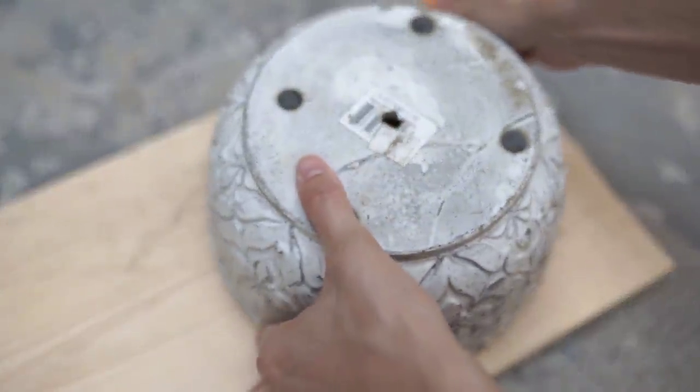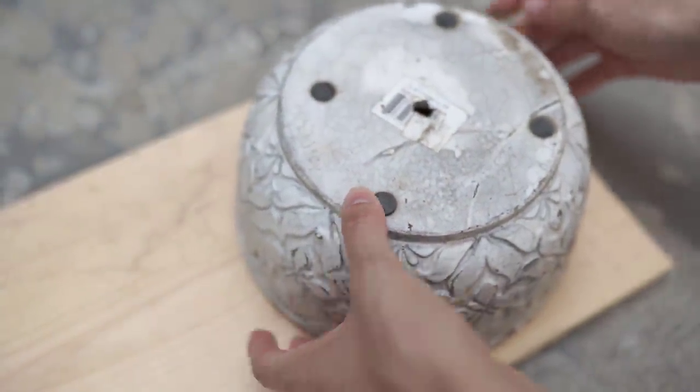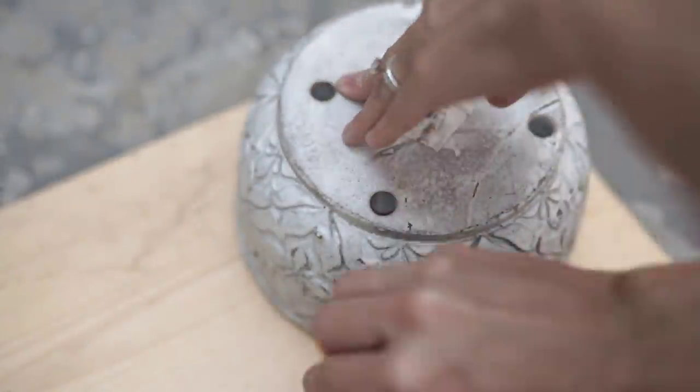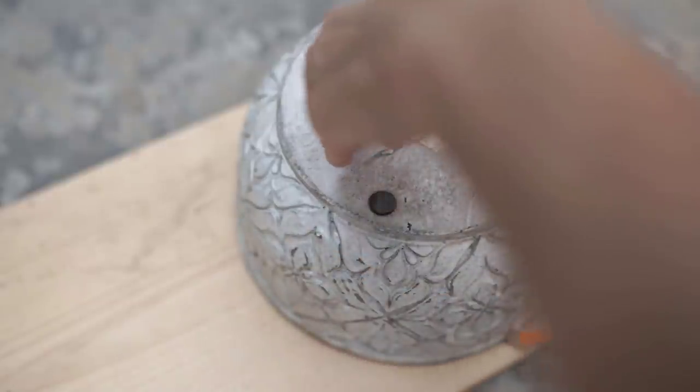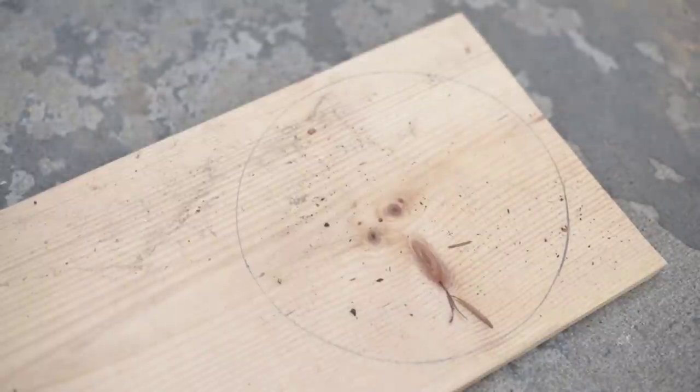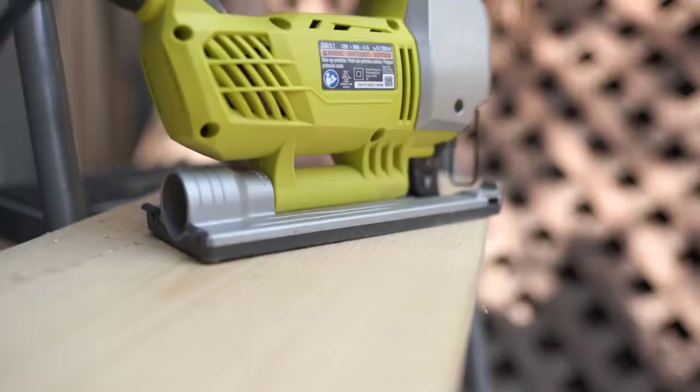For the next riser, I'm going to take that pine fence type board and I'm just going to draw a circle. I just used an old planter pot that I had. This one's probably about eight inches around. Once I have that circle drawn out, I'm going to take my jigsaw and just cut it out.